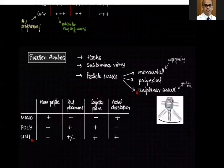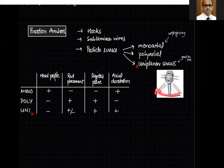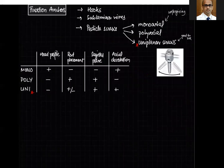Regarding fixation anchors: monoaxial pedicle screws are very strong and low profile but unforgiving. The most preferred types are polyaxial screws and uniplanar screws. The problem with polyaxial screws is that you cannot effectively derotate the vertebra using them. Uniplanar screws move only in one plane — the barrel does not move in the mediolateral plane — so you can derotate the vertebra on the screw. Uniplanar screws are therefore preferred for direct vertebral rotation.